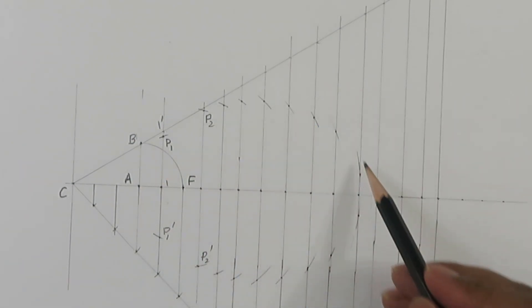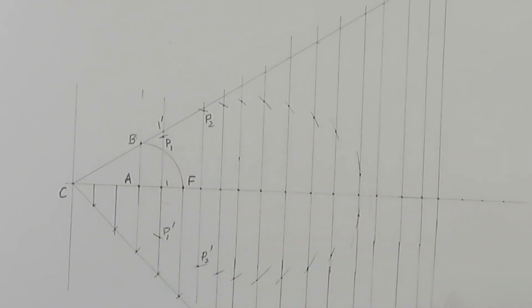If we connect these points with a curve, then it will give us ellipse. For connecting the curve, we will use a French curve.